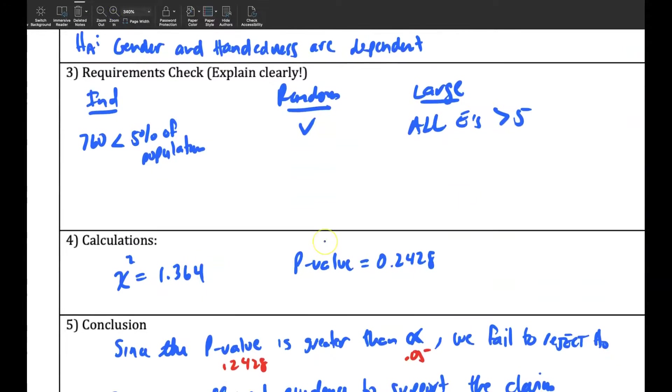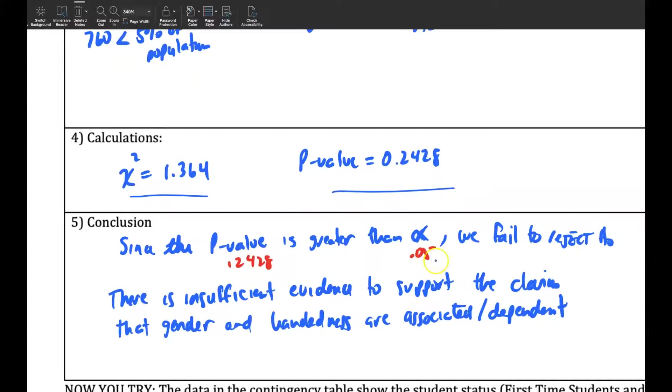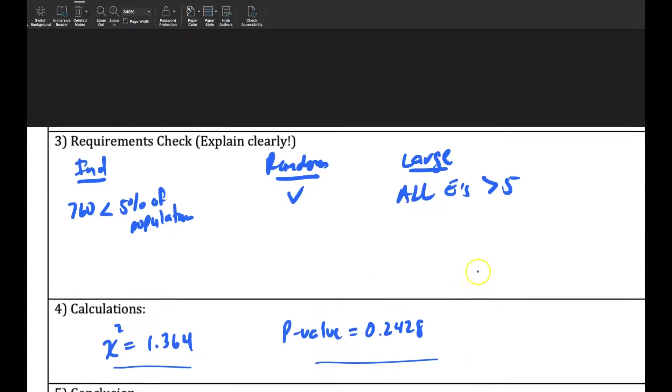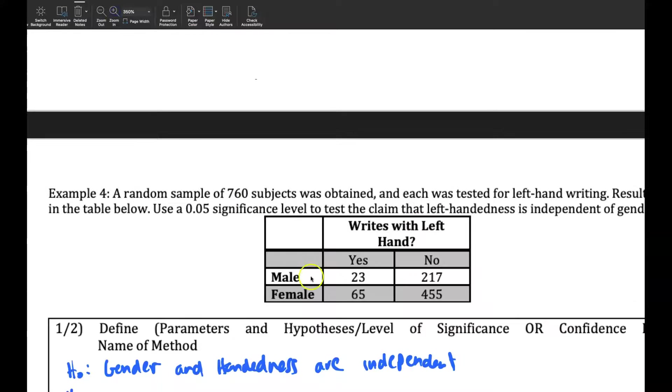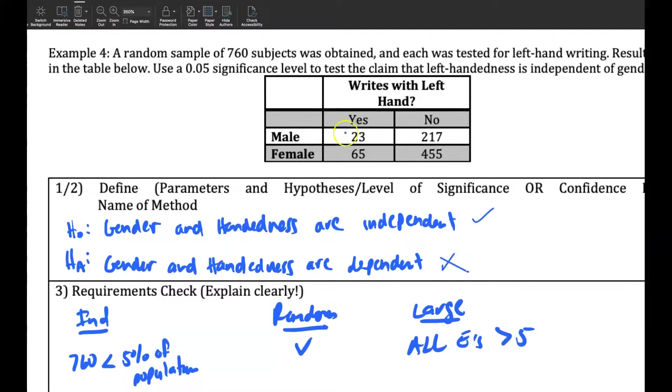And so again, to run the test, after we run the test, you get a chi-squared of 1.364. Your p-value is 2.48. And so now we know the p-value is greater than alpha, 0.05. So we fail to reject. We're failing to reject this. And then we're rejecting this. So we think that there is no relationship between gender and handedness. It's kind of the same across the board. There's no, like, one more male, more female, or not left-handed.